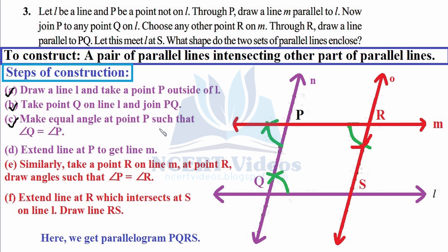Part D: make equal angle at point P such that angle Q equals angle P. Put the compasses needle at Q and draw an arc with a convenient radius; with the same radius place the needle at P and draw a similar arc. Then pick the needle up from P and measure the distance to Q's arc point, replicating it at P's arc. This copies the angle. Since these are alternate interior angles of a transversal, the resulting lines will be parallel.